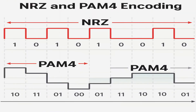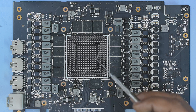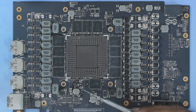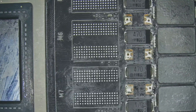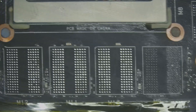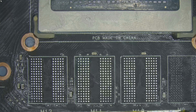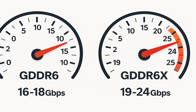GDDR6X takes it up a notch with PAM4 signaling — Pulse Amplitude Modulation with four levels. Instead of just high and low voltage, it uses four different voltage steps to represent two bits in a single symbol, which increases the data rate without increasing the number of wires. But those four voltage levels are much closer together, so it's way more sensitive to noise, timing mismatch, and even trace length differences on the PCB. That's why GDDR6X memory modules are placed very close to the GPU core. It needs perfect tuning during boot-up — what we call memory training. If even one chip isn't aligned properly, the entire system refuses to boot. Even a single bad GDDR6X chip means no display, no BIOS, just fan spinning.